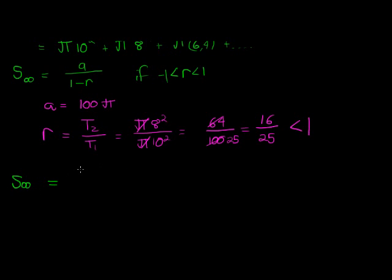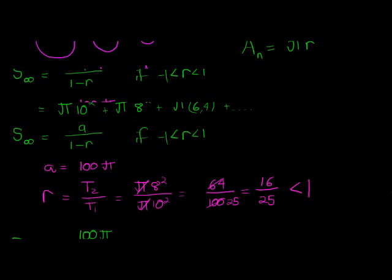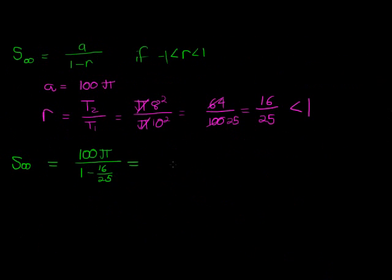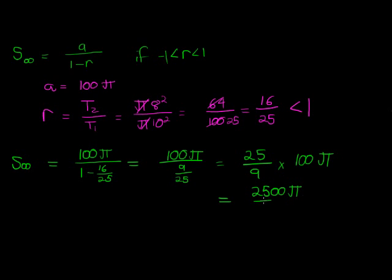So let's substitute into our formula. The sum of the infinite sum is therefore 100 pi divided by 1 minus 16 over 25. I'm not even going to use a calculator, I'm going to give my answer in terms of pi. So this can be 25 over 25, which gives me 9 over 25. When I divide with a fraction I flip and multiply, so it's 25 over 9 times 100 pi. And there I get my answer, 2500 pi over 9.